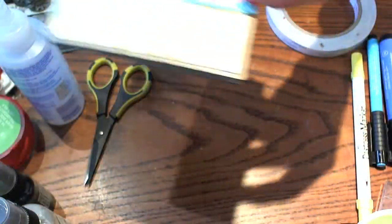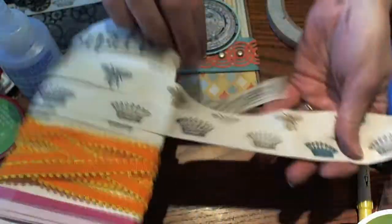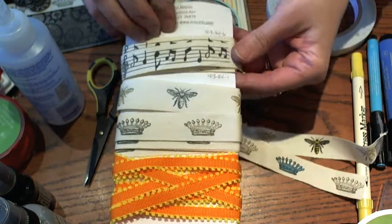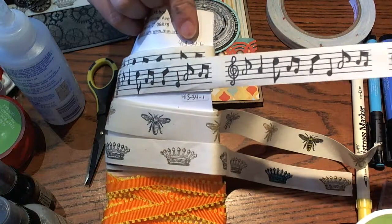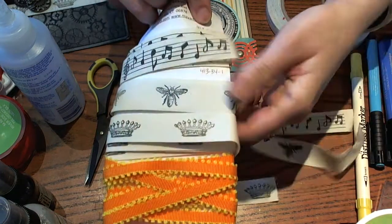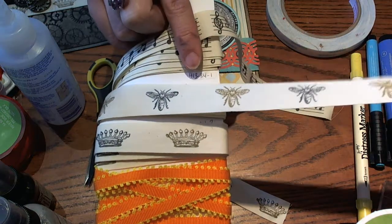And then I just wanted to share one small other tip with you. I was playing around with this ribbon the other day. This is our printed ribbon. 413-346 is the music. 413-341 is the cute bumblebees.